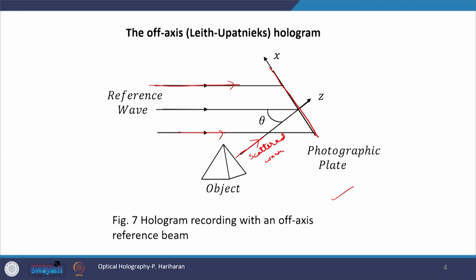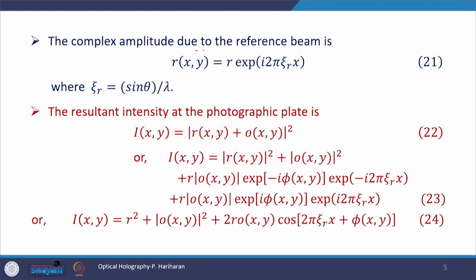The object is also illuminated from the same source, and the reference beam is generated from the same source as well. One beam goes to the object, gets scattered, and then falls on the photographic plate, while the reference beam directly falls on the photographic plate. There they combine and generate a hologram — this process is called recording of the off axis hologram. The scattered beam is inclined at angle theta with respect to the reference beam.